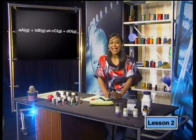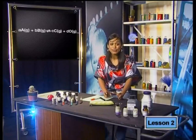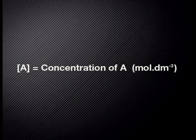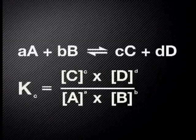Remember, at chemical equilibrium, the concentration of both reactants and products is constant. Chemists use a square bracket as a shorthand to indicate concentration of a substance. So, this symbol reads the concentration of A in mole per decimeter cubed. Now, let's have a look at the special formula for the equilibrium constant expression, or Kc, for this general chemical equation.